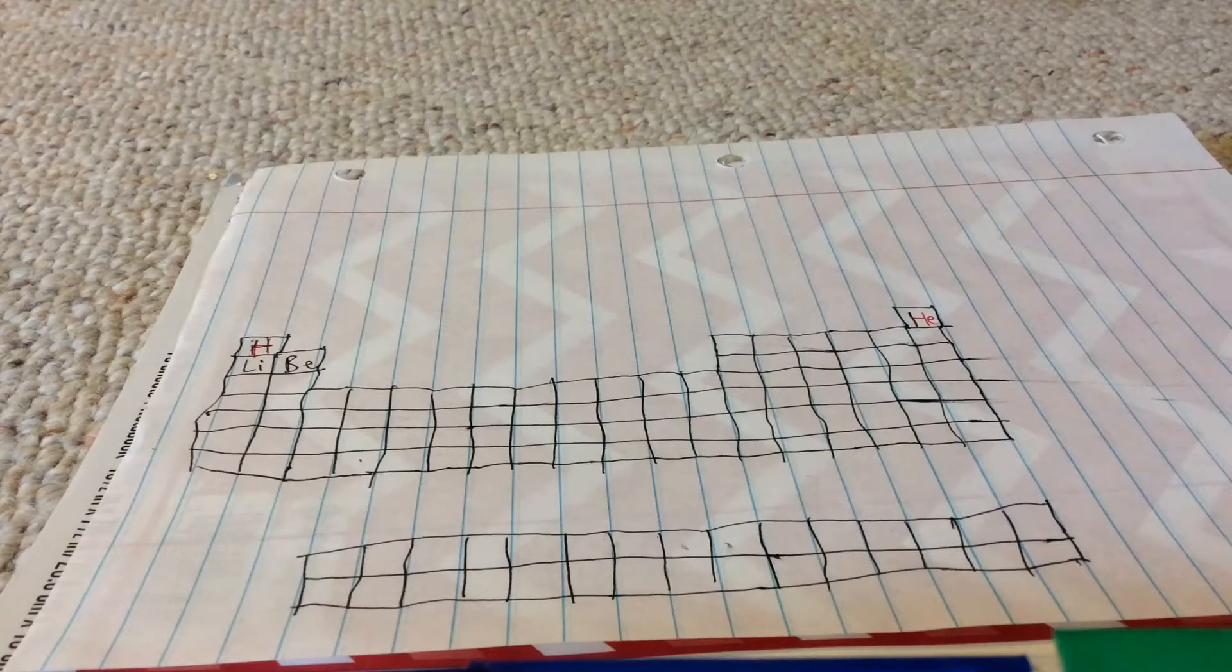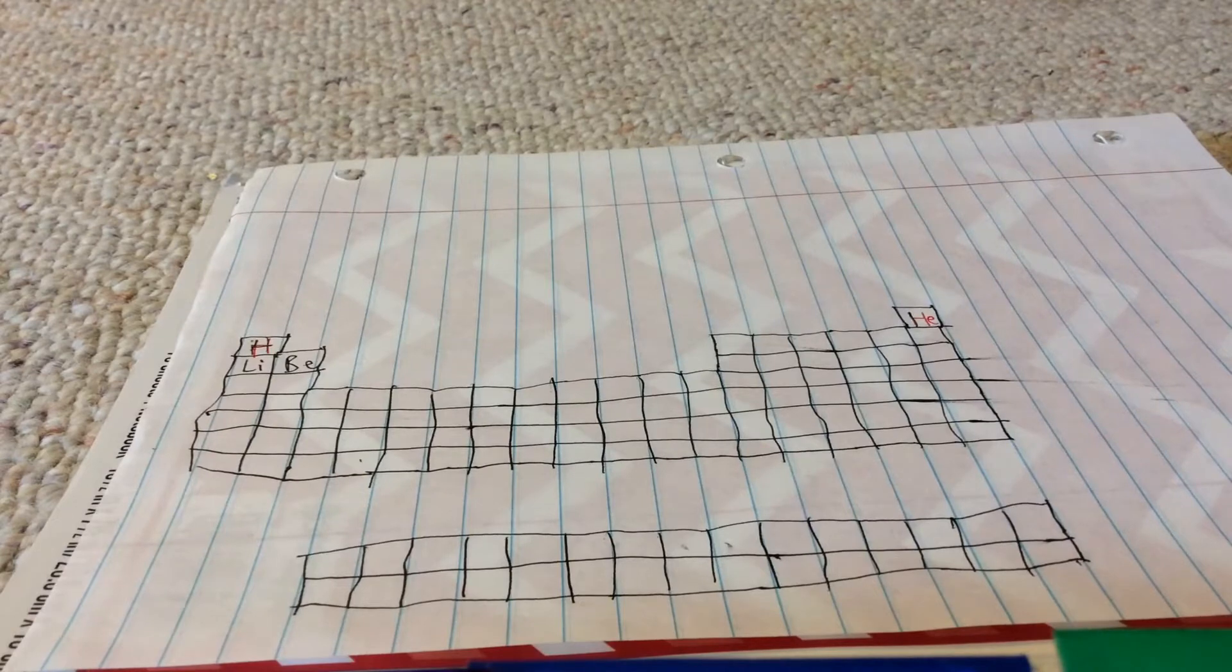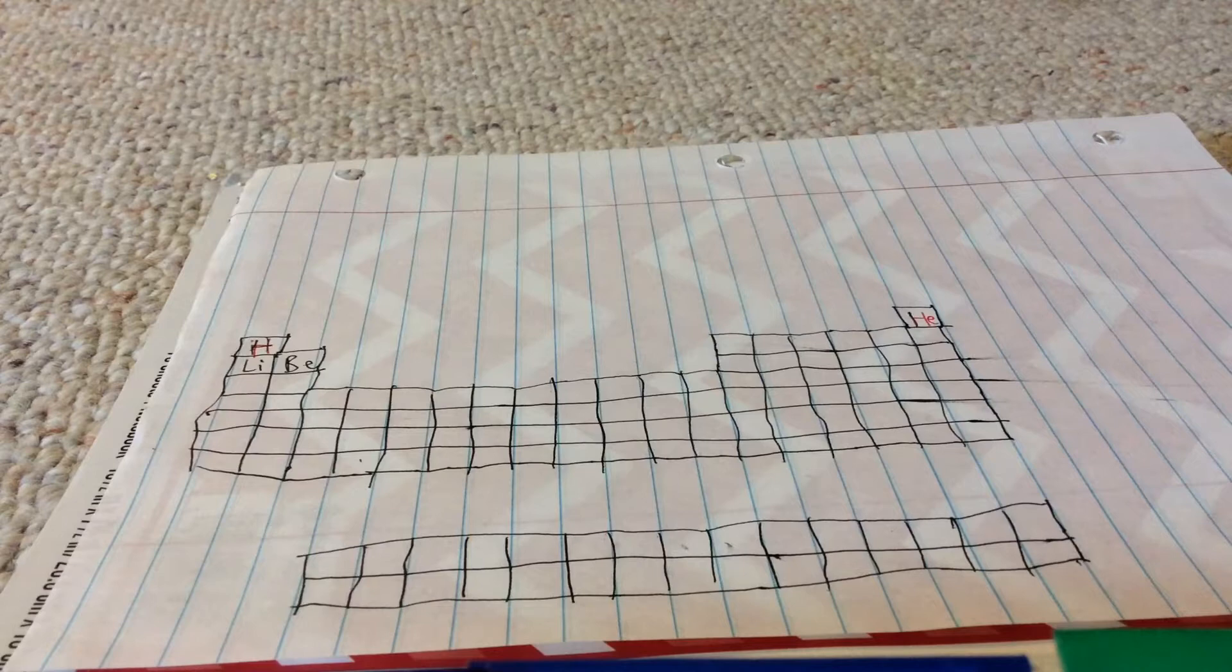Hello everyone, welcome to the second part in drawing the periodic table. The second part is labeling the elements, which there are four types of elements.